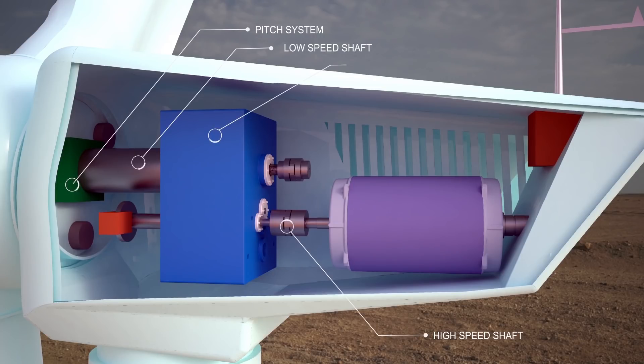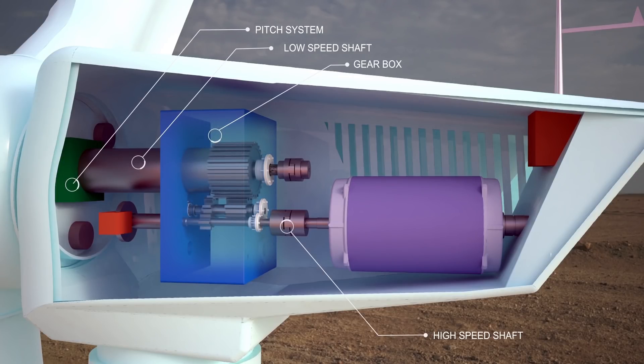The gearbox connects the low speed shaft to the high speed shaft and increases the rotational speeds from about 30 to 60 rotations per minute to about 1,000 to 1,800 RPM. This is the rotational speed required by most generators to produce electricity.